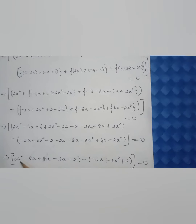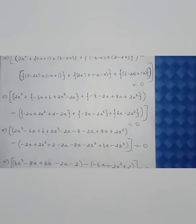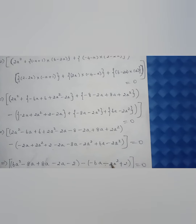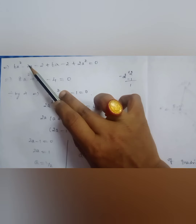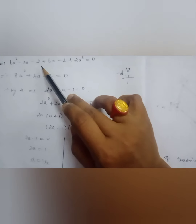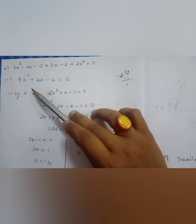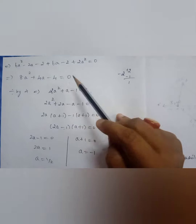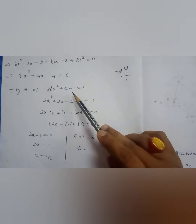Now I can group all the a² terms, a terms, and constants. I am getting 6a²−8a+a — those two cancel — minus 2a−2, minus of (−6a − 2a² + 2). Grouping further: −6a² terms and combining gives a quadratic equation: 8a² + 4a − 4 = 0. Dividing by 4, the quadratic equation turns out to be 2a² + a − 1 = 0.